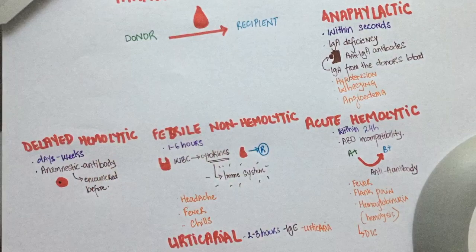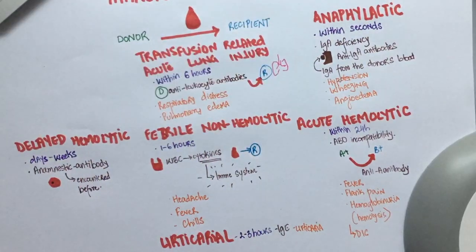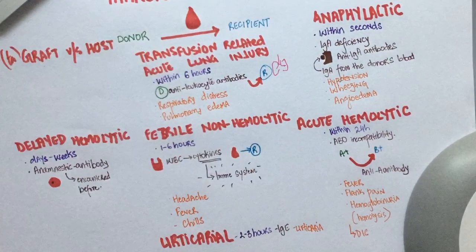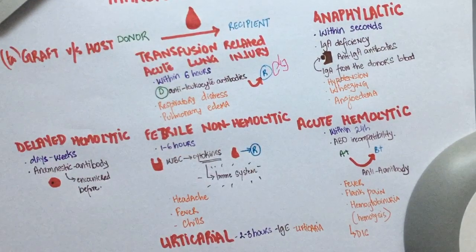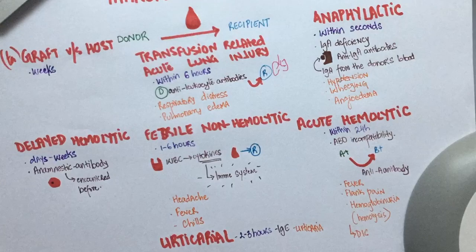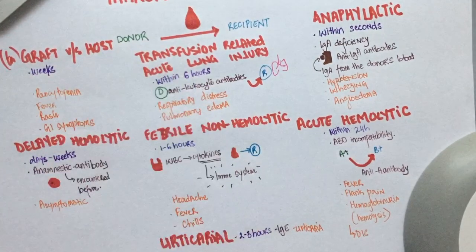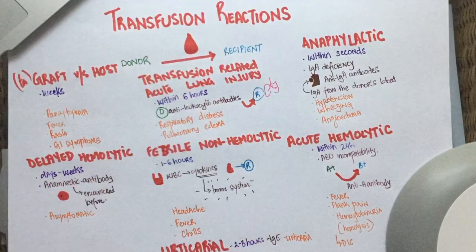The last one is transfusion-related graft-versus-host disease. This takes place within weeks of transfusion. Patients could present with pancytopenia, rash, fever, and GI symptoms. Now that we have a fair idea of the different transfusion reactions, let's solve questions to apply what we've learned.